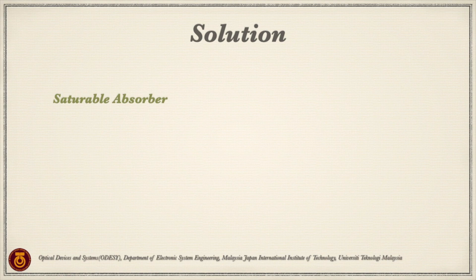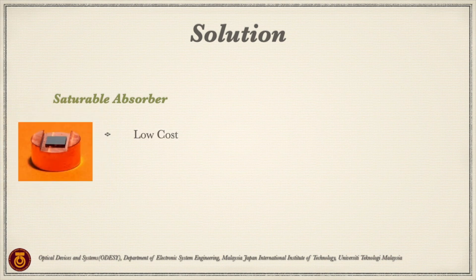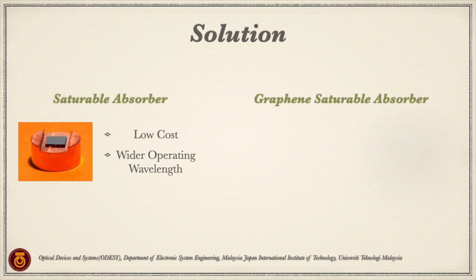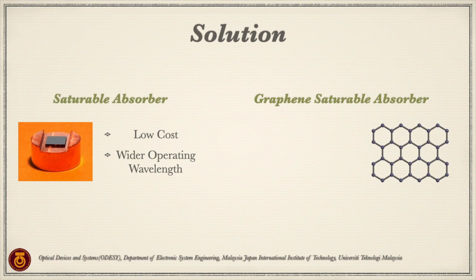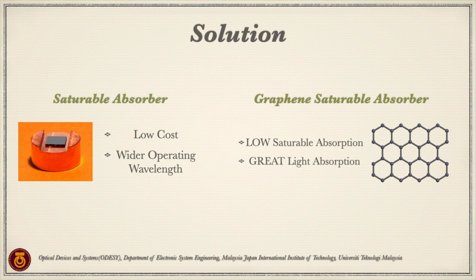The reason we use the saturable absorber to analyse this non-linear optical absorption is that it is comparatively low cost in manufacturing, which is more economical, and it offers a wider operating wavelength which provides better performance. A graphene saturable absorber will be used in this research. Graphene, an allotrope of carbon with a special honeycomb lattice structure, possesses several optical properties such as low saturable absorption, which minimises power loss, and great light absorption due to its ultra-wide band operating wavelength, which exactly fulfils the criteria essential for Q-switch fiber laser analysis.